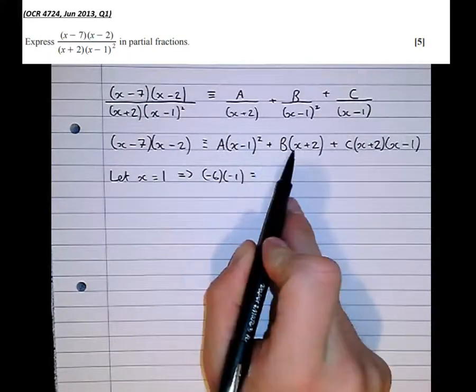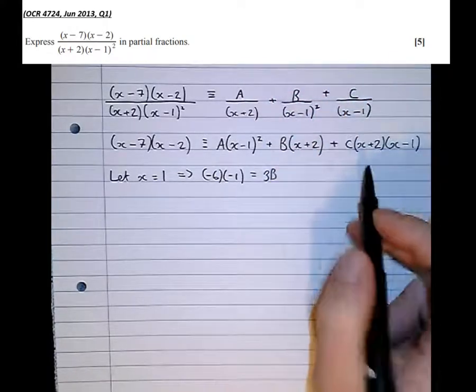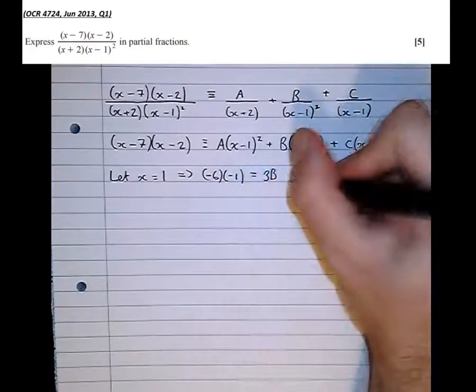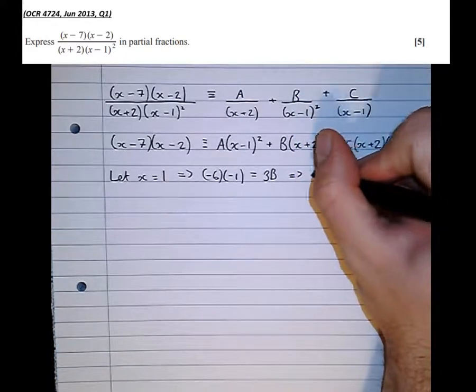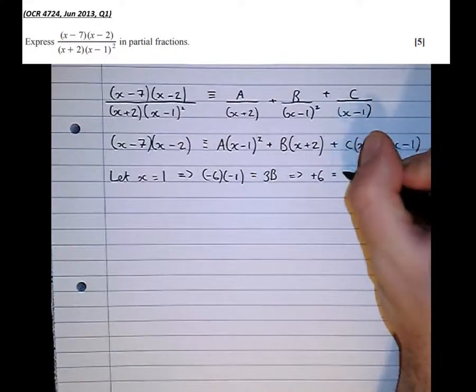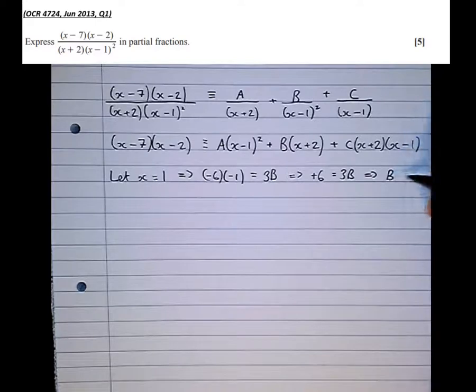Equals, subbing in 1 there, it's going to disappear. 1 minus 1 is 0. So here, 1 plus 2 is 3 times b. And here, 1 minus 1 is 0, the whole term's going to disappear. Which means that minus 6, or rather, positive 6, it's a double minus, equals 3b. Which means that b equals 6 over 3, which is 2.